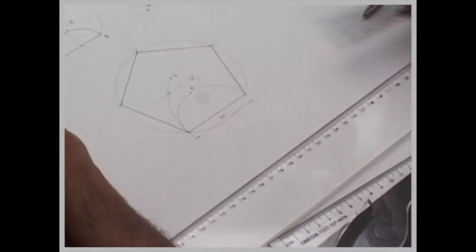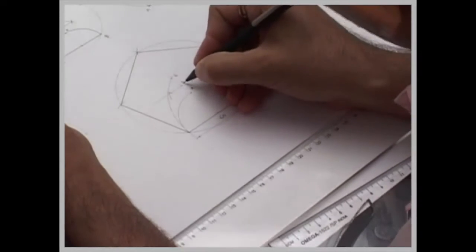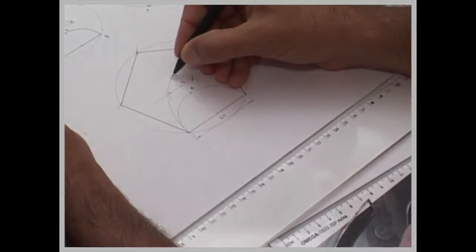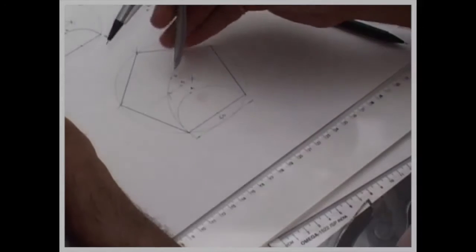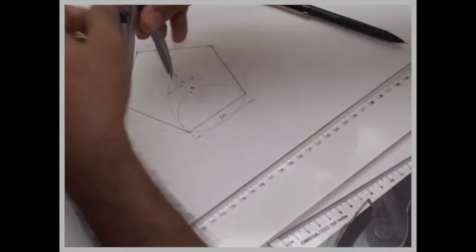Now let's say if I want to draw a hexagon with the same method. This is called a general method. Like how I have marked 4, this is 5, this is 6. I can construct hexagon using the same method.